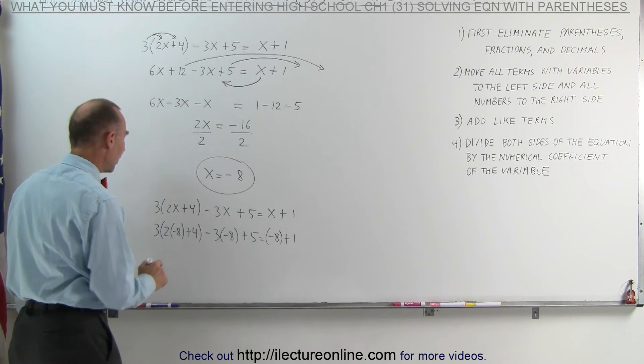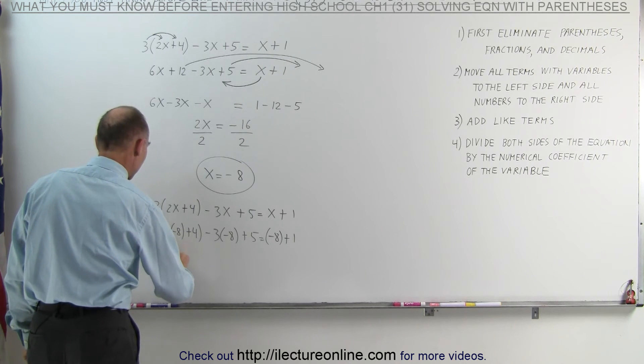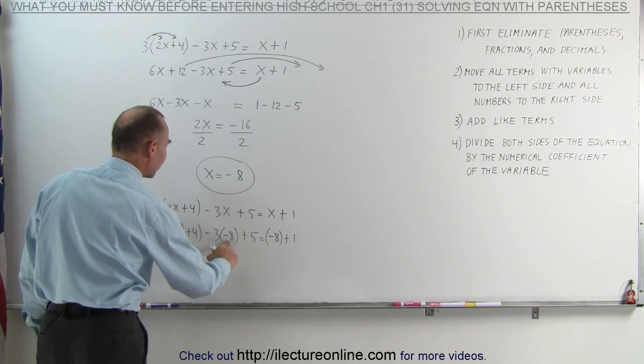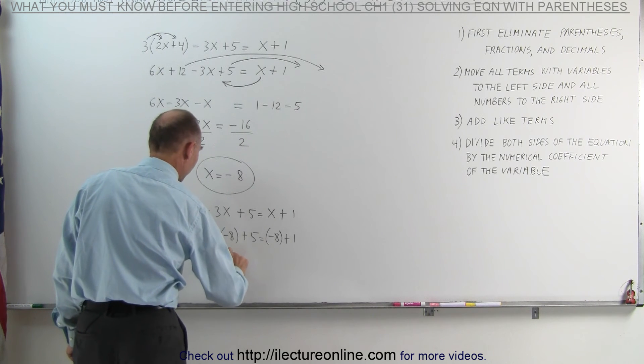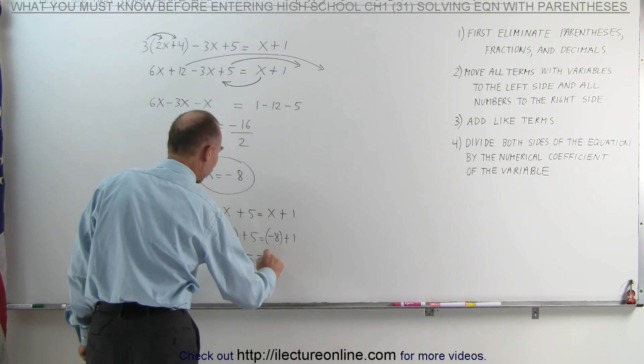Simplifying this, we get the following. First, we multiply this together. We get 3 times negative 16 plus 4. A minus 3 times a minus 8 is a plus 24 plus 5 equals a negative 8 plus 1 gives me a negative 7.